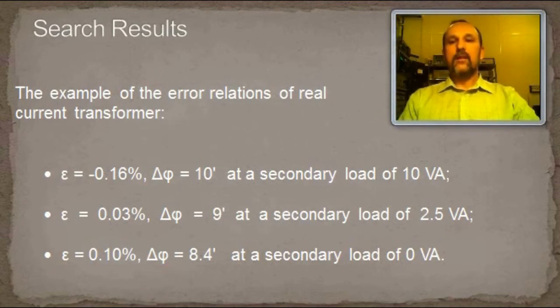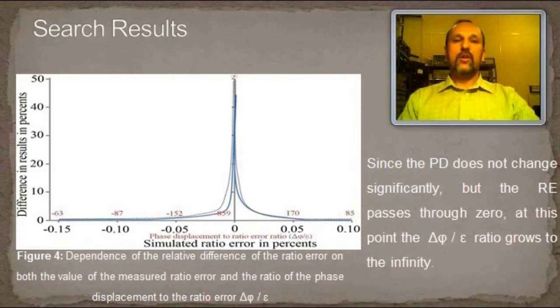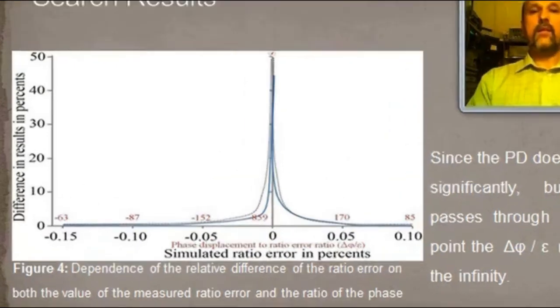The hypothetical example would be error relations in this slide. For metrology, the degree of equivalence of the results of measuring current transformer errors at these ratios is of interest, especially when the ratio error is equal to 0. This case was modeled, and the changing nature of the relative difference in the ratio error measurement results for the above example was investigated. The simulation results are present graphically below.